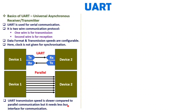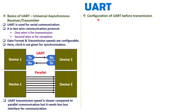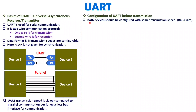Before transmission, UART must be configured. Both devices connected via UART must agree on the speed of data transmission. We need to configure the speed on both device 1 and device 2, which is referred to as the baud rate. The baud rate must be the same for both devices; otherwise, neither device can understand at what speed and rate the data is coming.